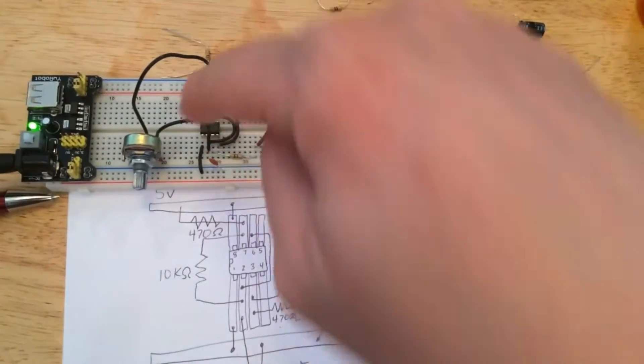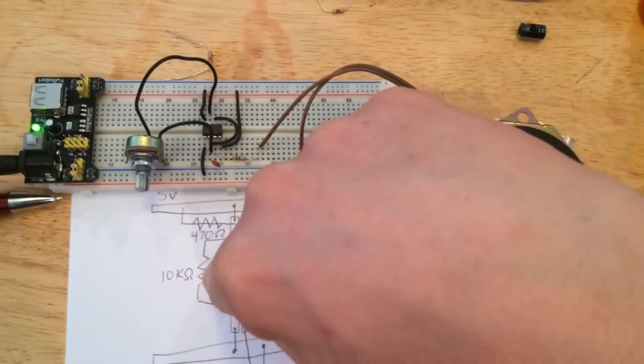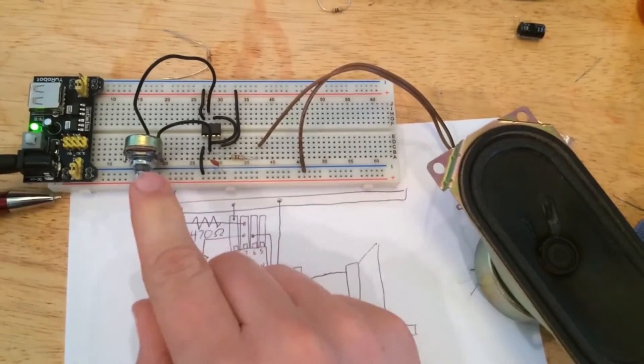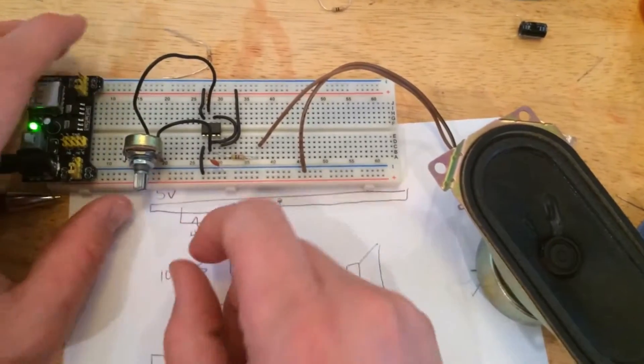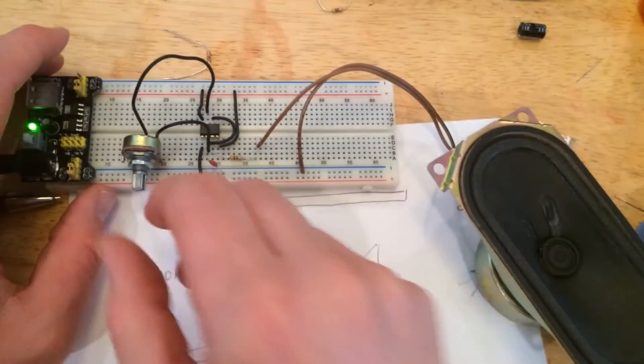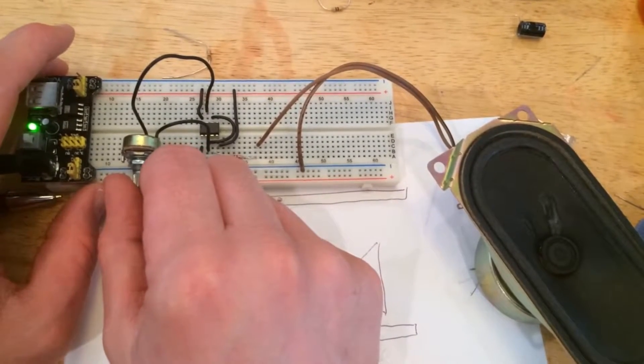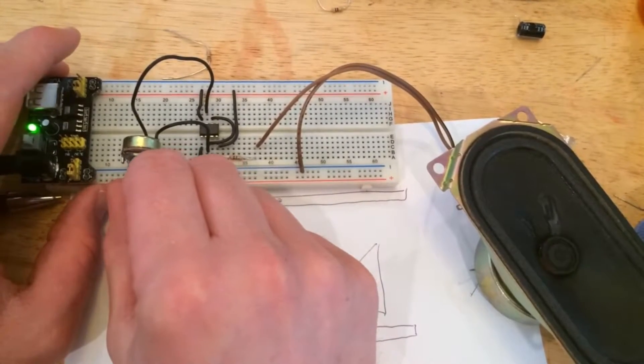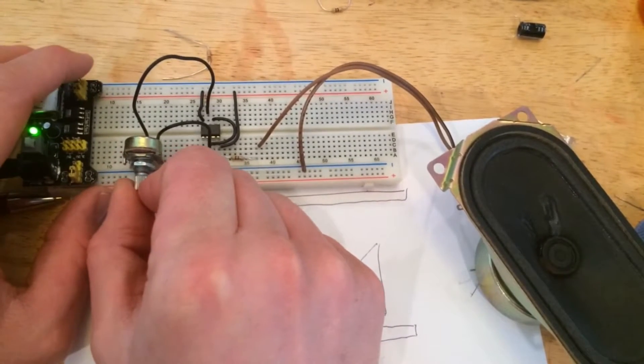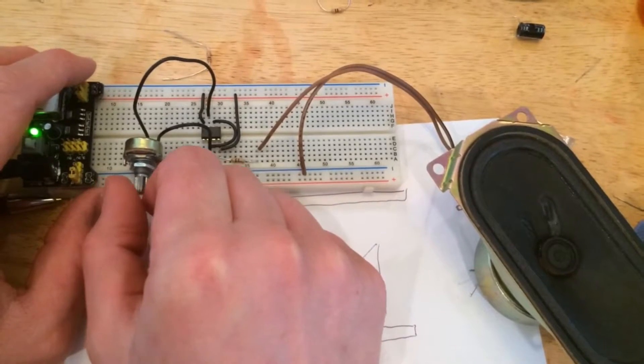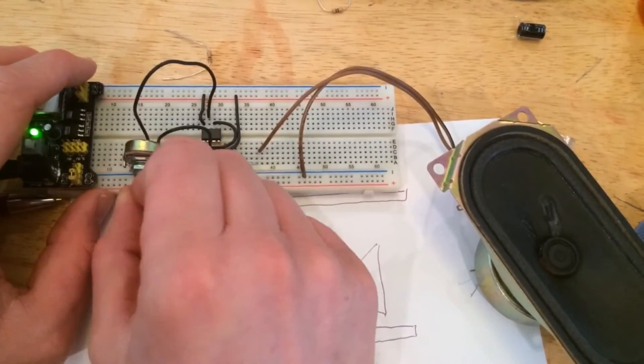All right, so replacing the 10k resistor with a 100k potentiometer that I have, it adjusts the tone of the 555 timer. That's awesome.